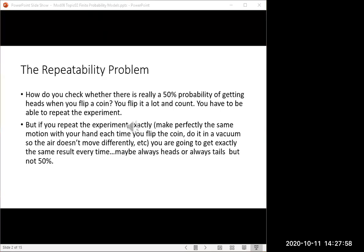The philosophical problem is though, if you repeat the experiment exactly, make exactly perfectly the same motion with your hand each time, you're going to get the same result every time. Maybe it'll always come up tails or always come up heads. You won't get the 50%. So what does it mean to repeat the experiment?